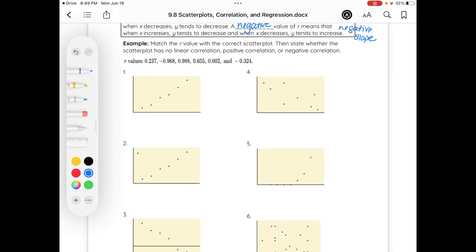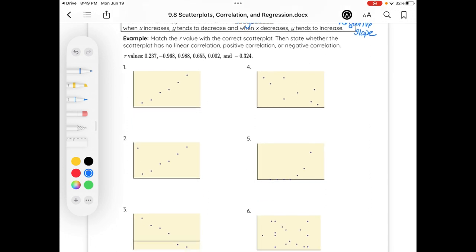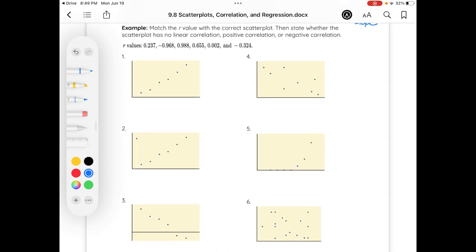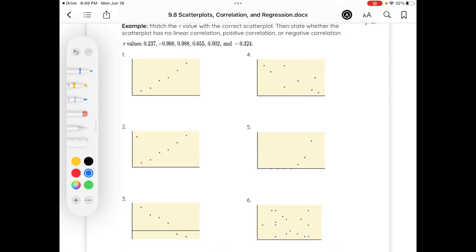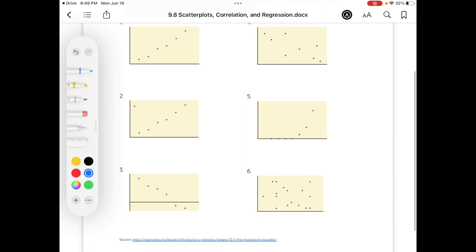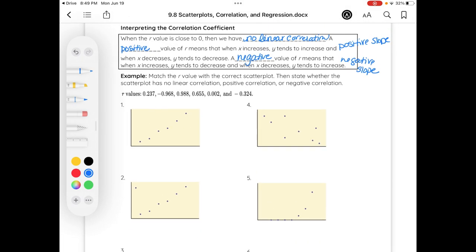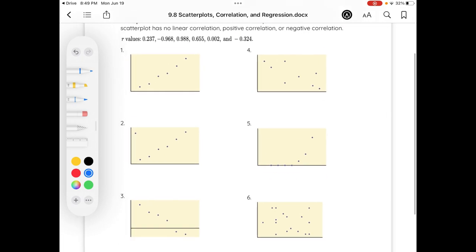Match the r value with the correct scatter plot. Then state whether the scatter plot has no correlation, positive, or negative. So we already did the positive, negative, and no correlation. So as the closer that we are to zero, there is no correlation. So we said number six down here had no correlation. So my smallest number is two thousandths because there's no correlation.